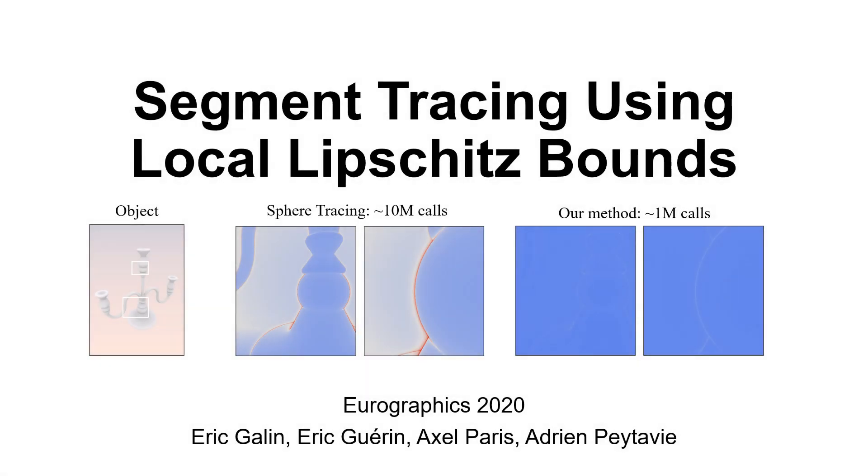We present segment tracing, a new algorithm for computing the intersection between a ray and a procedurally defined implicit surface.